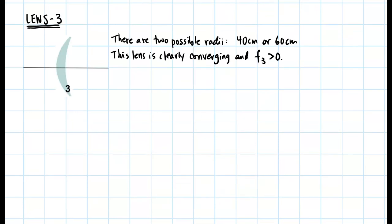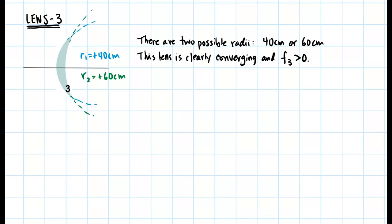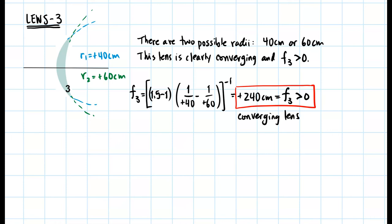For lens 3, there are two possible radii: 40 or 60 centimeters. This lens is clearly converging since it is thicker in the middle, so f3 should be greater than zero. Both radii of curvature will be positive since they lie on the right side. By drawing the curvature, r1 should be the smaller radius, positive 40 centimeters, and r2 the larger, positive 60 centimeters. Putting these into the lens maker equation gives f3 equal to positive 240 centimeters, which confirms a converging lens.